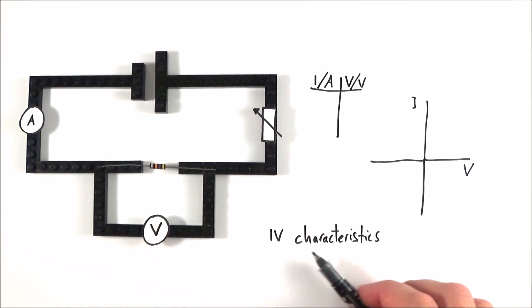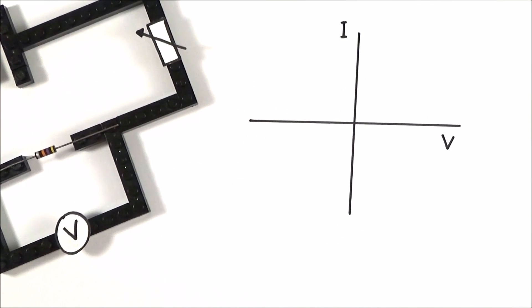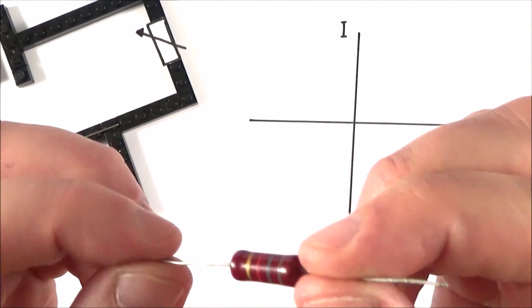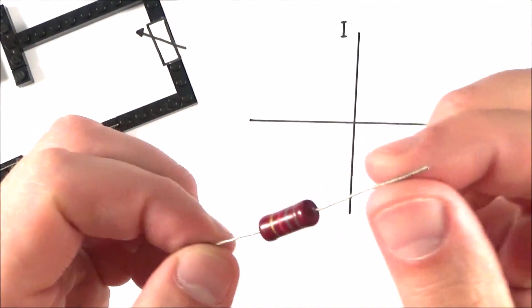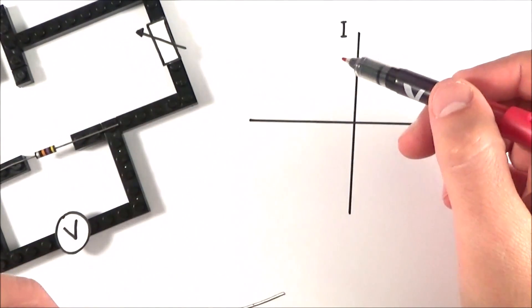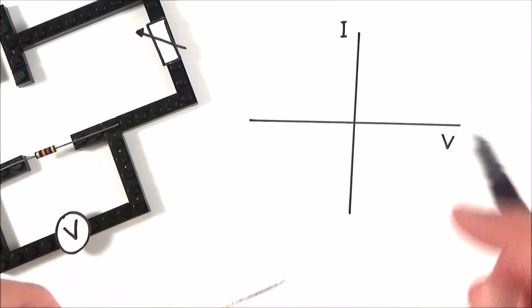So this means we can now look at the IV characteristics of different components. First of all we can look at this resistor. Now a resistor is designed to have a constant resistance—that's the whole point in it. Therefore it acts as an ohmic conductor. What that means is that the current is always directly proportional to the potential difference.